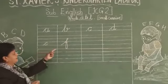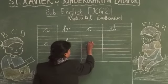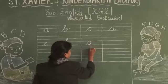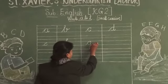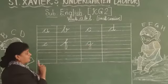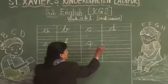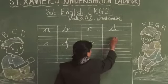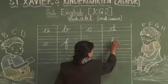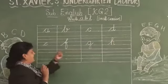F is for Flower. Then after F, G. Come down to the red line. This is your G. G is for Girl. After G, you will write H. H is for Horse. H is for Hat. This is your H.